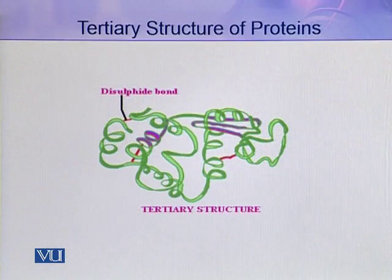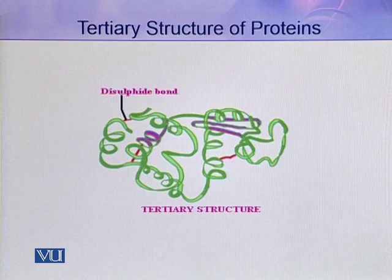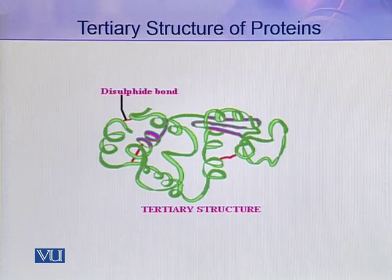Here you can see this is a single polypeptide chain and it has assumed the tertiary structure by folding back and forth, assuming a fully functional three-dimensional structure. In this structure you can easily see the disulfide bonds that have been formed between the different amino acids of the same polypeptide chain.